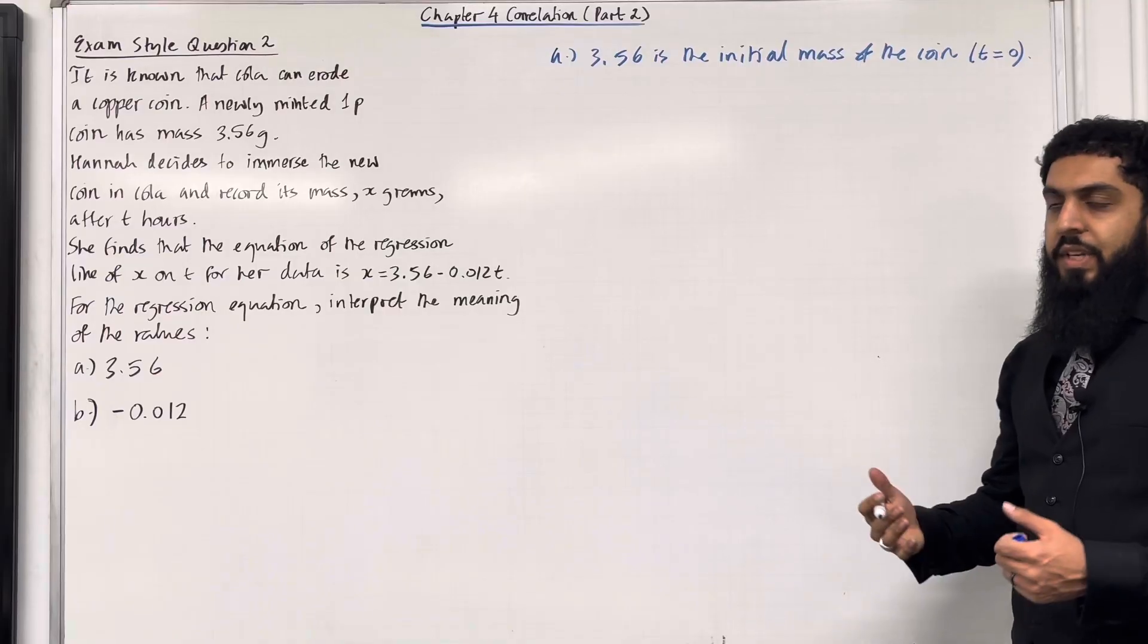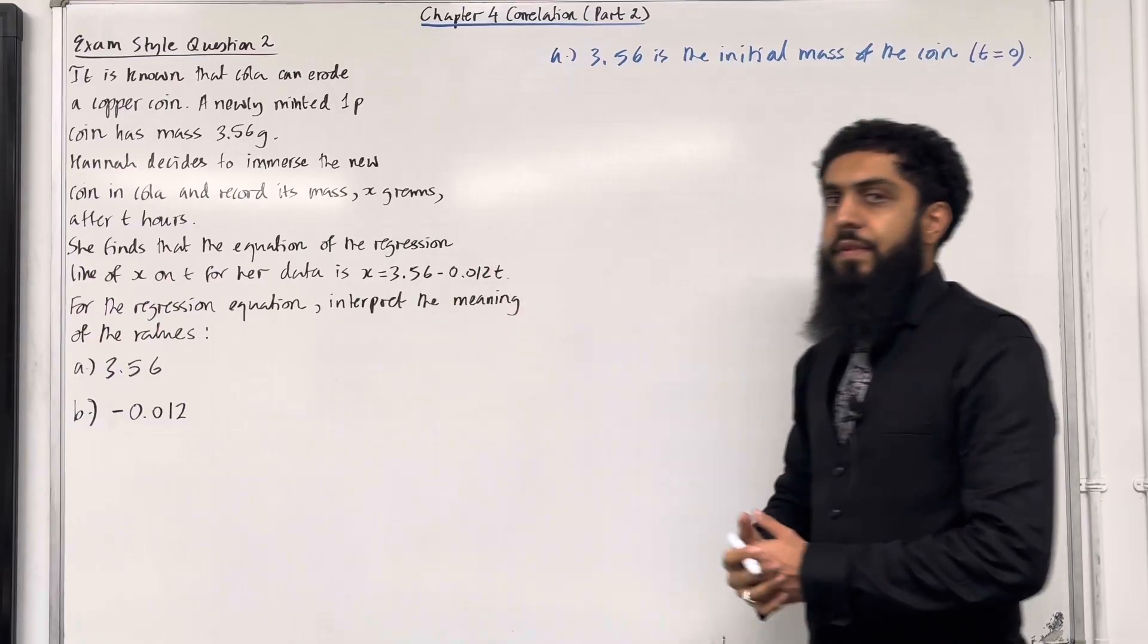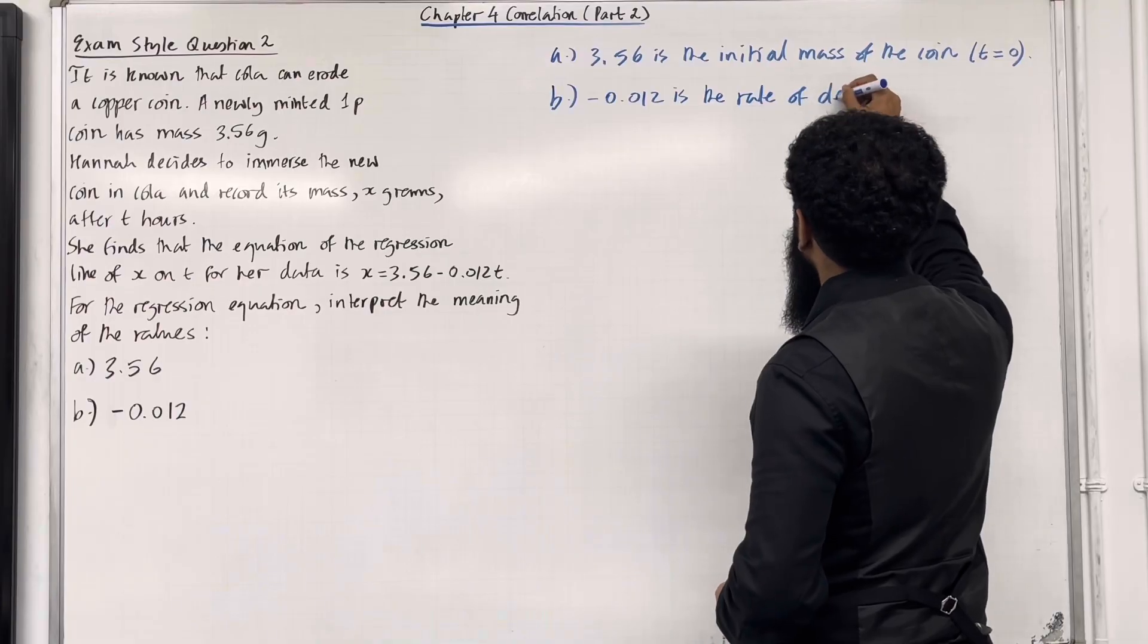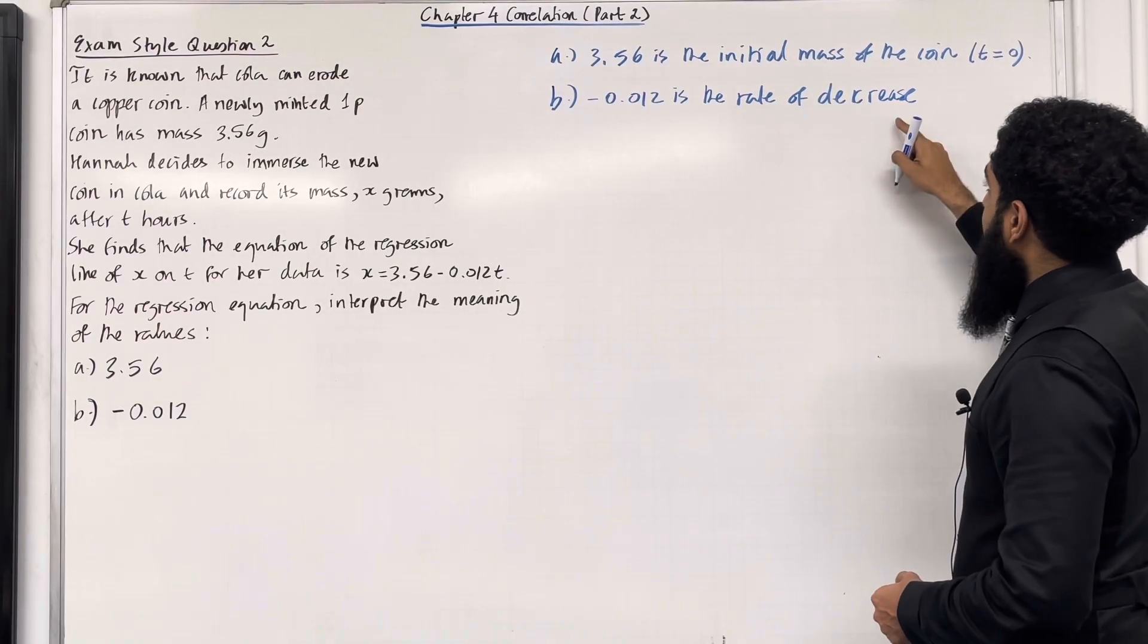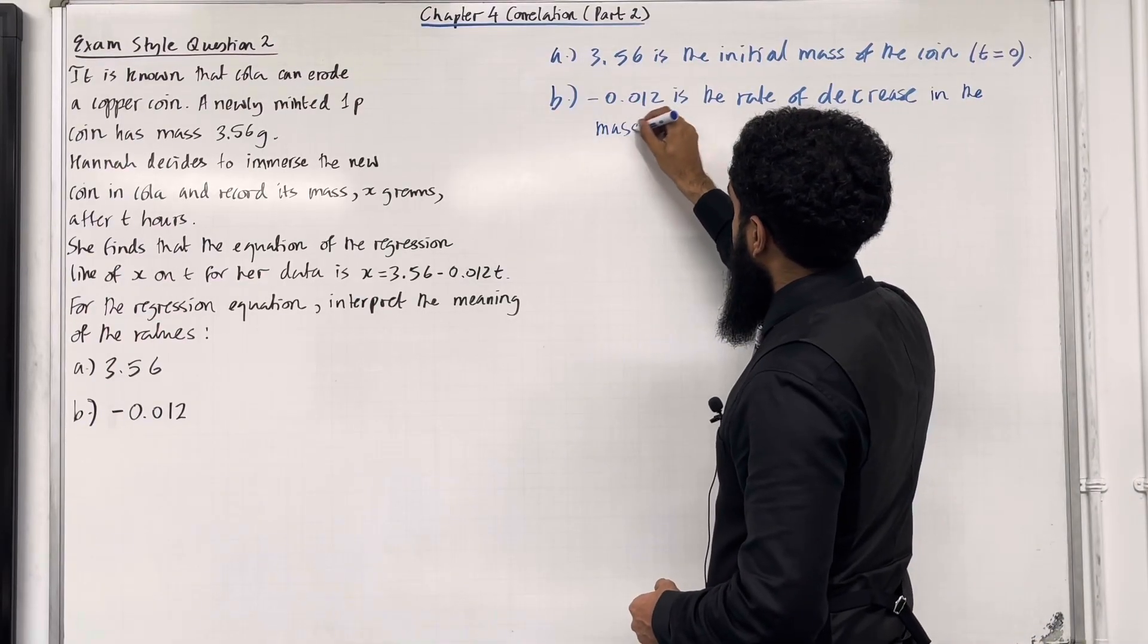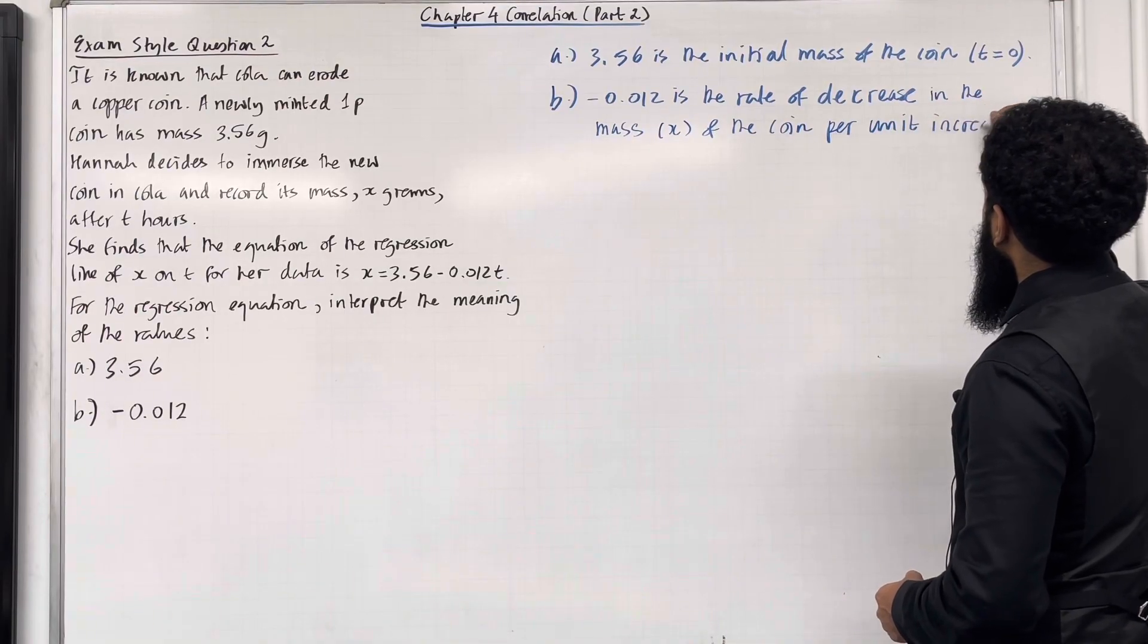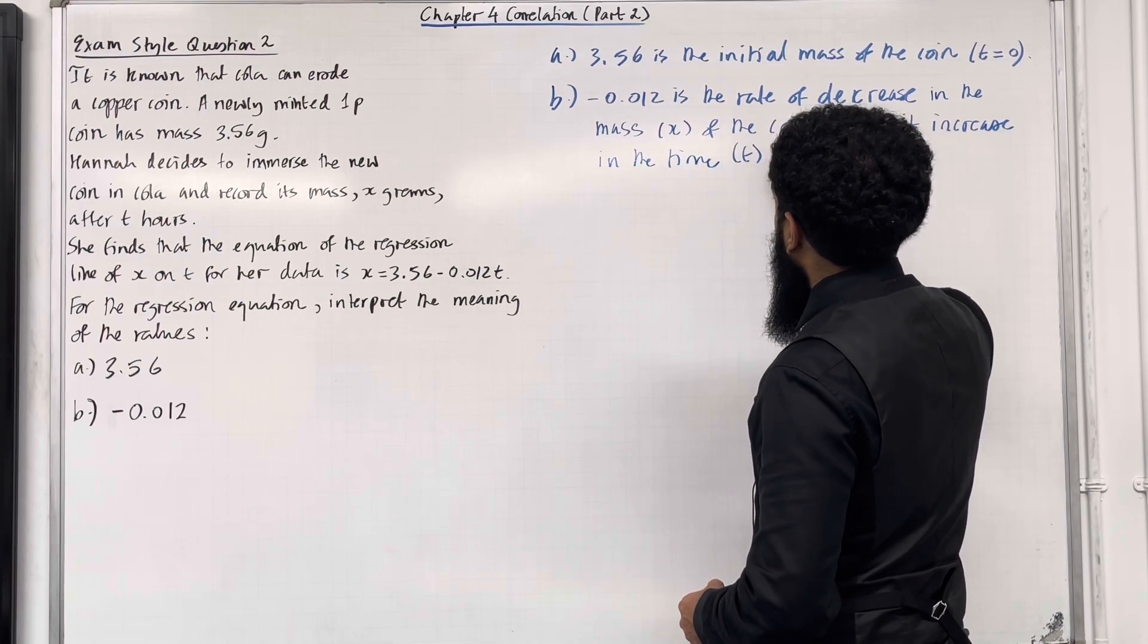Moving on to part B. Now we are going to give the interpretation of -0.012, which is the gradient of the regression line. -0.012 is the rate of decrease, decrease because we have a negative gradient, the rate of decrease in the mass, x, of the coin per unit increase in the time t.